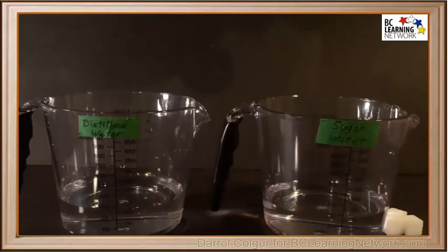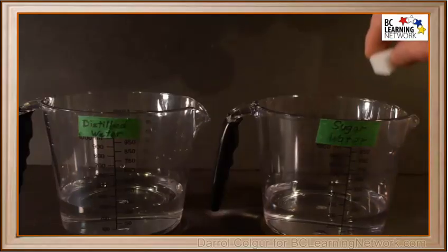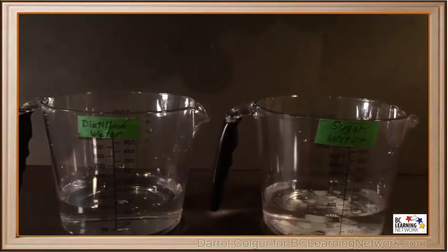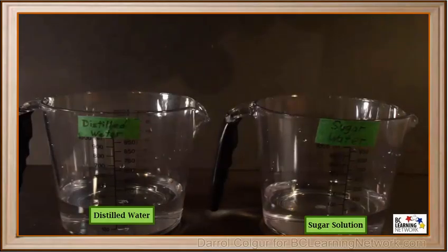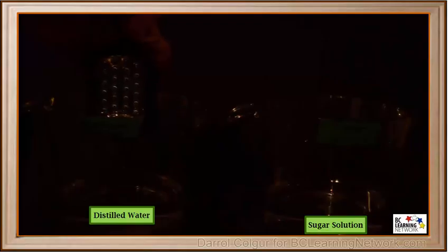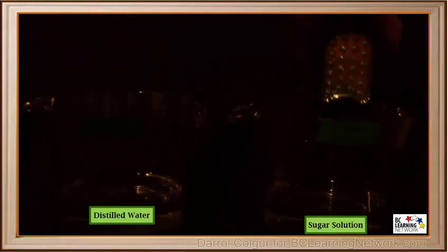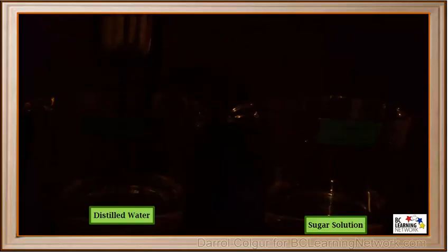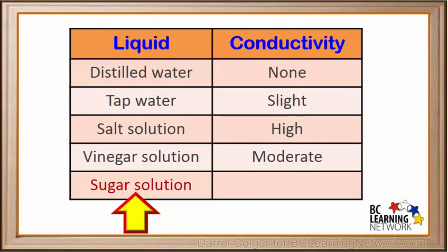We'll write down vinegar solution on our table and describe its conductivity as moderate. We'll add distilled water to two containers and label the one on the right as sugar water, then add sugar cubes and stir them to dissolve. We'll turn out the lights and test their conductivities. The distilled water does not conduct at all, and neither does the sugar solution. What we see on the flashlight are just reflections — these liquids are both non-conductors. So we'll add sugar solution to the table and list its conductivity as none.